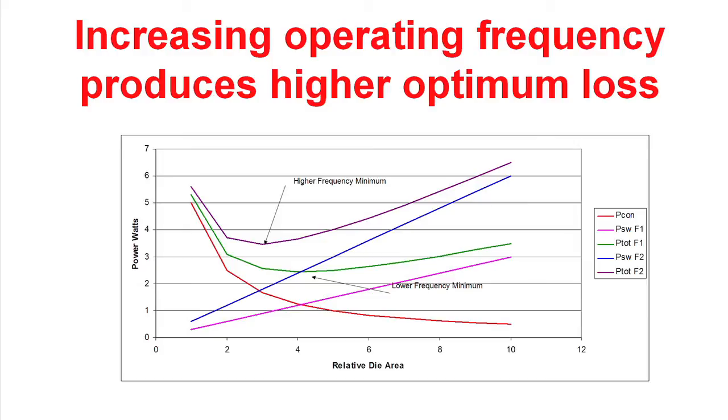In this next chart, we show the impact on the losses in the control circuitry and FETs as a function of the die area. Basically, as we make the die area larger and larger, we're reducing the on resistance of the MOSFET and we're also increasing parasitic capacitances in the output of the power devices. And the larger we make these parasitic capacitors, the larger the switching losses.